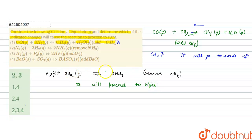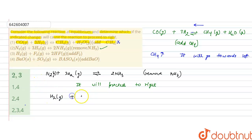The forward direction is favored due to the change in conditions given, so this reaction will proceed to right. This is a correct option. The third reaction is H₂ plus F₂ forms two HF in gaseous state.